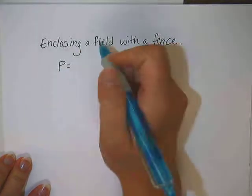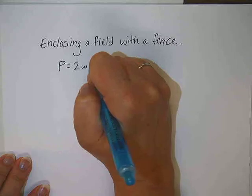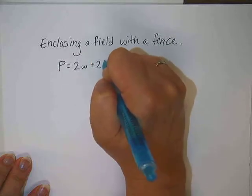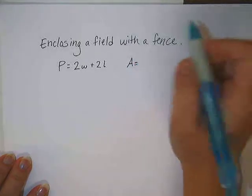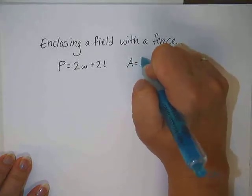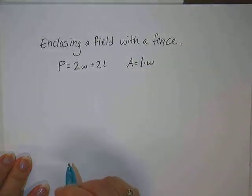The fence would be the perimeter of the field. So let's review some formulas. Perimeter is given by the formula 2 widths plus 2 lengths for our rectangular field. And then if we want to deal with area, that would simply be the length times the width of our rectangular field.